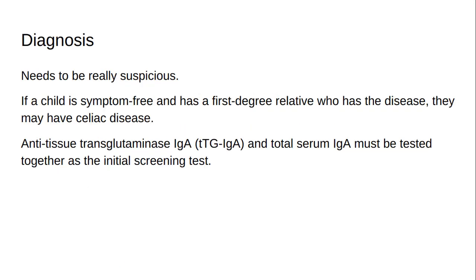When diagnosing the disease, it is necessary to be suspicious of it. All routine tests need to be done. If a child is symptom-free and has a first-degree relative who has the disease, they may still have celiac disease. Antitissue transglutaminase IgA (TTG-IgA) and total serum IgA must be tested together as the initial screening test.